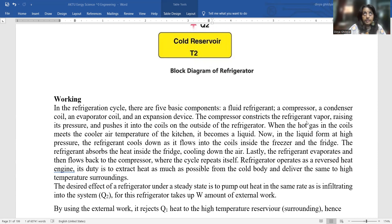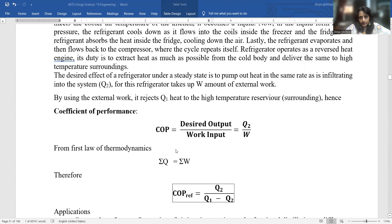The compressor constricts the refrigerant vapor, raising its pressure and pushing it into the coils on the outside of the refrigerator. When the hot gas in the coil meets the cooler air temperature of the kitchen, it becomes a liquid. In liquid form at high pressure, the refrigerant cools down as it flows into the coil. Lastly, the refrigerant evaporates and flows back into the compressor.